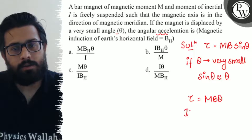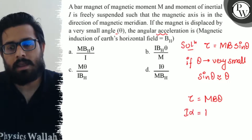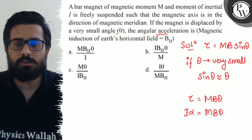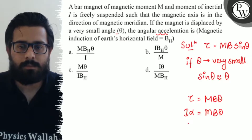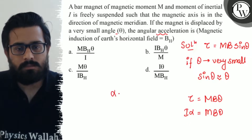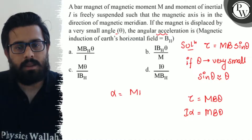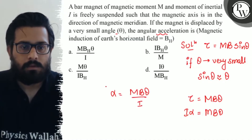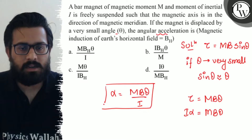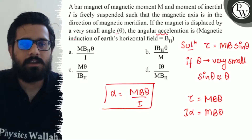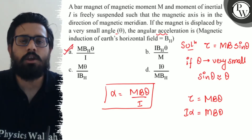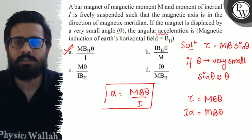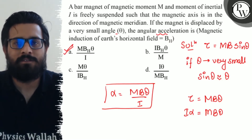Now τ can be written as I·α equals MBθ, using the concept of rotation. From here, alpha comes out to be MBθ/I. So this is the value of angular acceleration — MBθ/I — and hence option (a) is absolutely correct. I hope you got the concept of this question. All the very best!